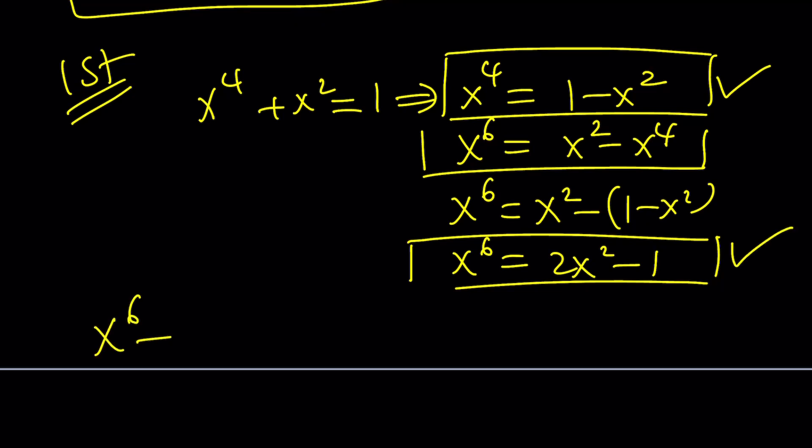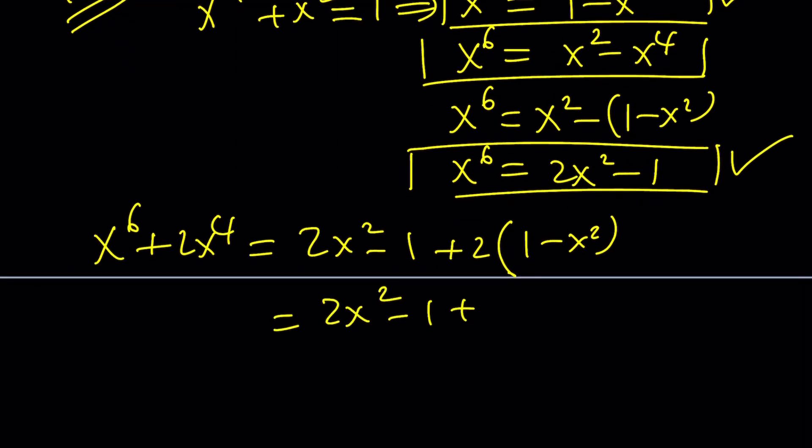And our goal is to evaluate x to the sixth plus 2x to the fourth. That's going to be 2x squared minus 1 plus 2 times x squared, which is 1 minus x squared. And this is 2x squared minus 1 plus 2 minus 2x squared. And 2x squared is going to cancel out. Now we're going to end up with 1 again. Make sense? This is the end of the first method.